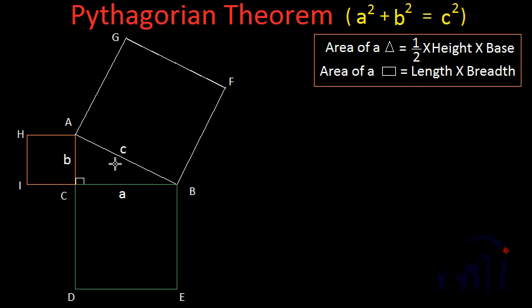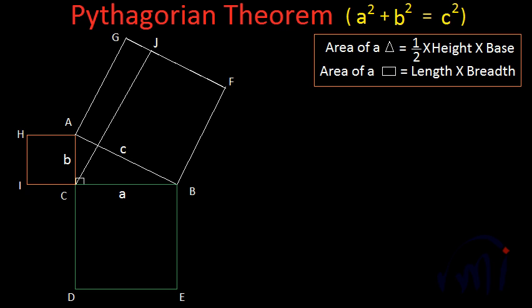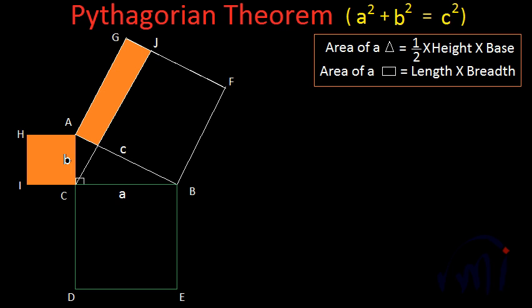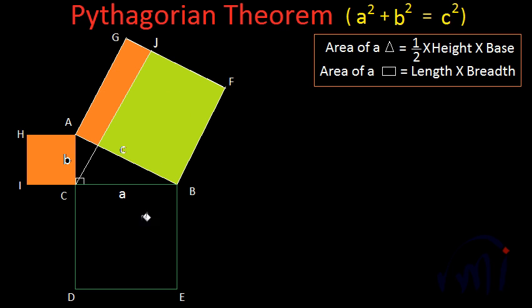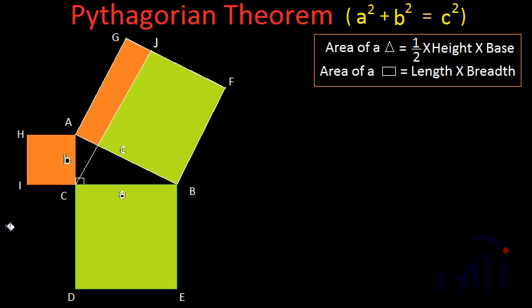First, we are going to do a few constructions. We are going to draw a line CJ which is parallel to AG. Then we are going to prove the area of this rectangle equals this square, and the area of this other rectangle equals this other square.